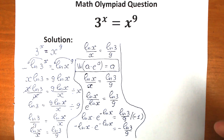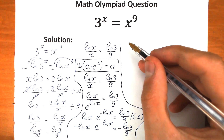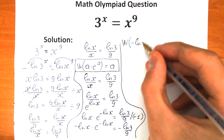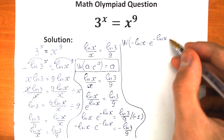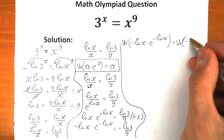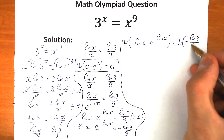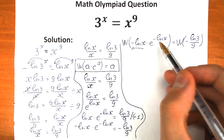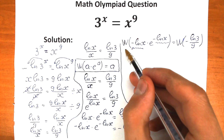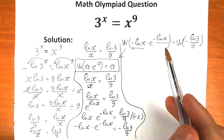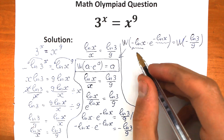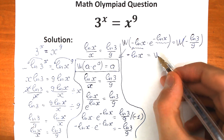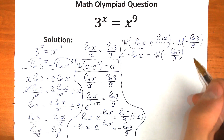We should apply the Lambert W function on both sides. We have Lambert W of minus natural log x times e to the power minus natural log x, and on the right hand side Lambert W of minus natural log 3 over 9. Since the expression minus natural log x appears both as the argument and as the exponent, the Lambert W function simplifies the left side to just minus natural log x, equal to Lambert W of minus natural log 3 over 9.